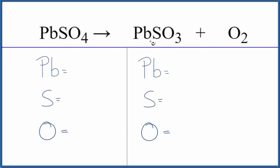Let's count the atoms up and balance the equation. So we have one lead atom, one sulfur, and four oxygens.